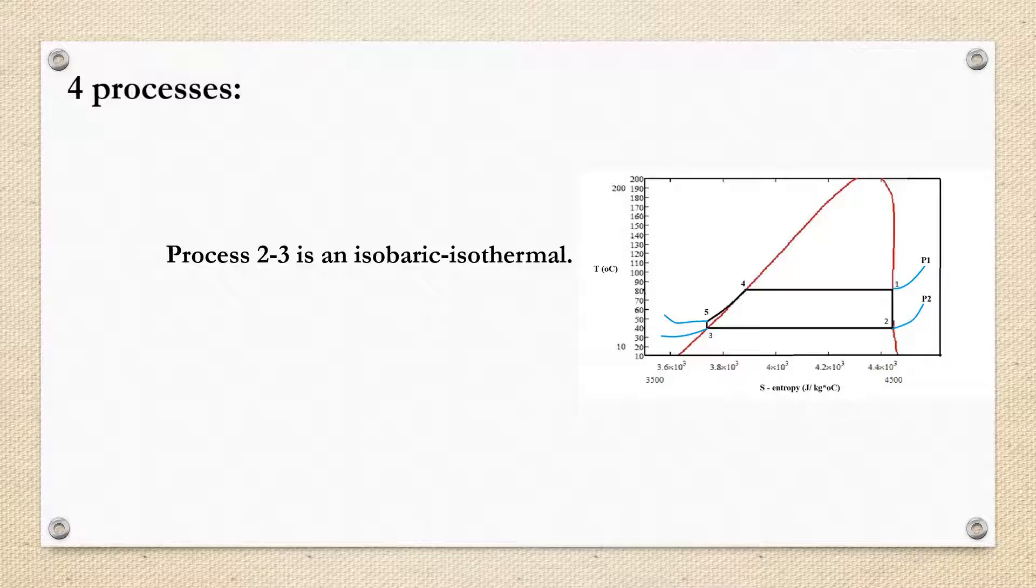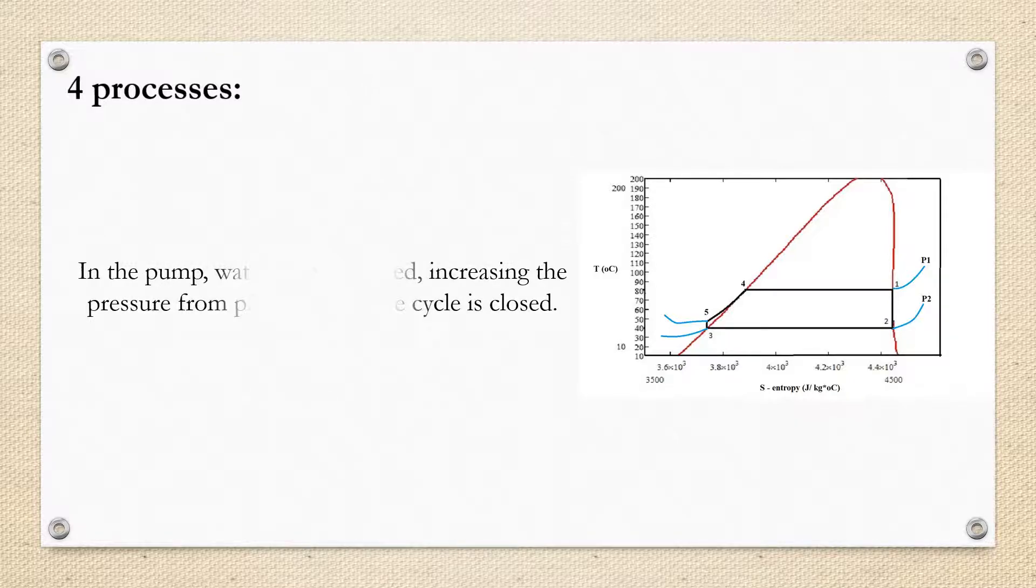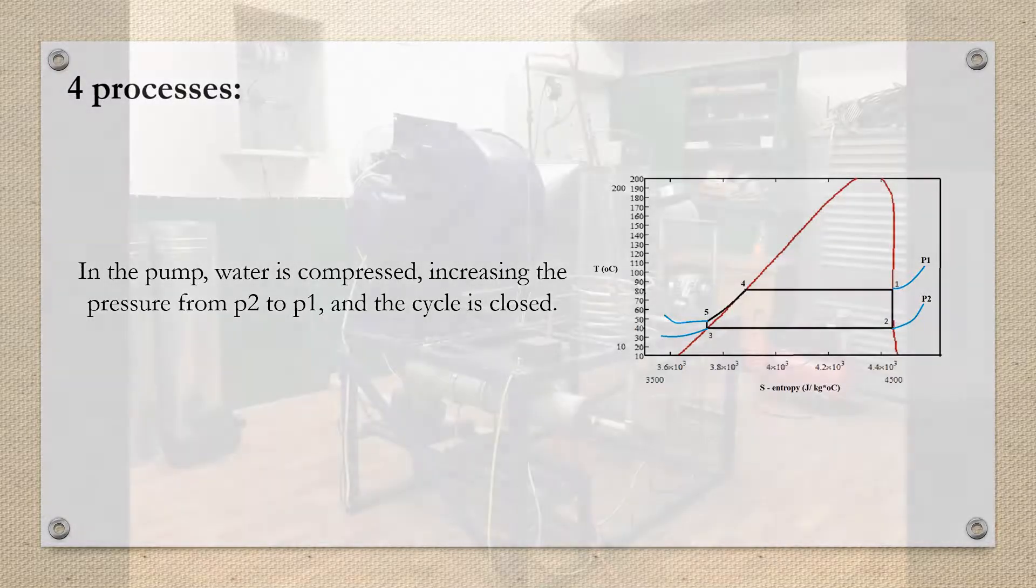In the pump, the fluid is compressed, increasing the pressure from P2 to P1, and the cycle is closed. The efficiency of the cycle is given by the net output power divided by the heat flow provided in the boiler.